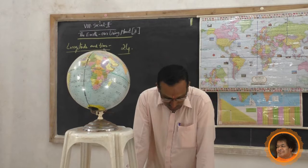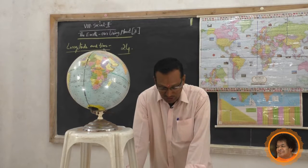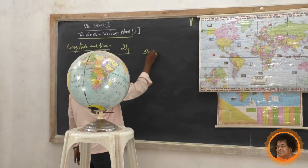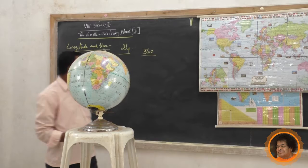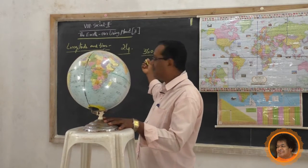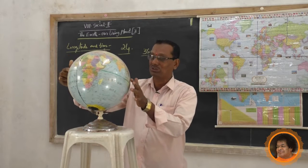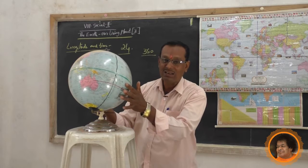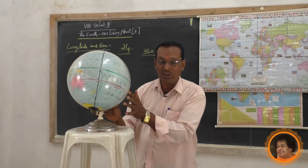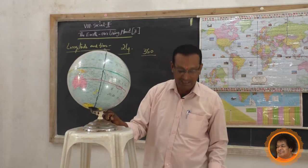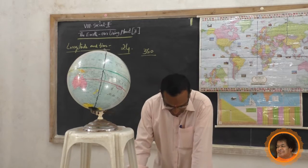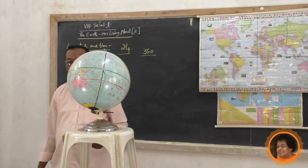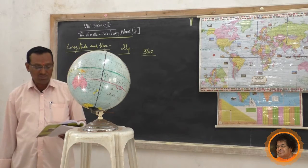The earth takes 24 hours to complete one full rotation. This means 360 longitudes are covered in a period of 24 hours. So the earth rotates on its own axis covering all 360 longitudes, and it takes 24 hours — that is one day.